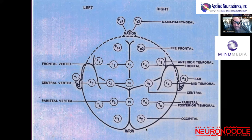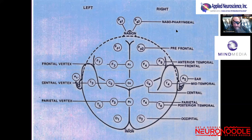The cortex is essentially the primary generator of all the voltages we see in EEG as far as voltage is concerned — not necessarily the rhythmicity. The cortex makes beta rhythm, which is a small cortical loop, but everything else requires other structures to generate rhythmicity. So when we look at the surface, we have to imagine deeper sources.